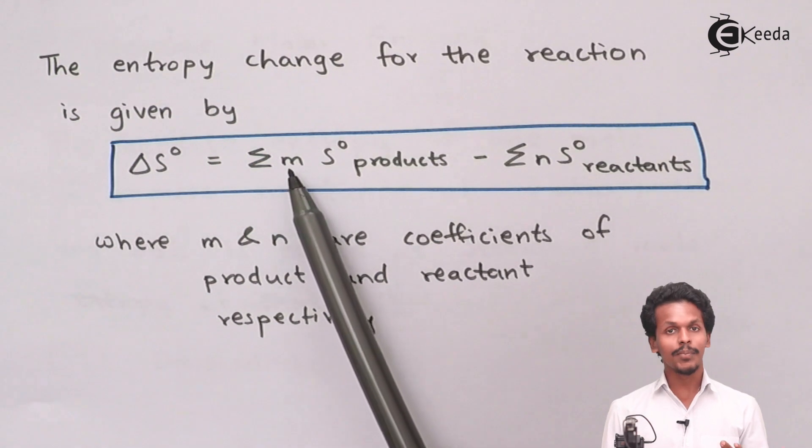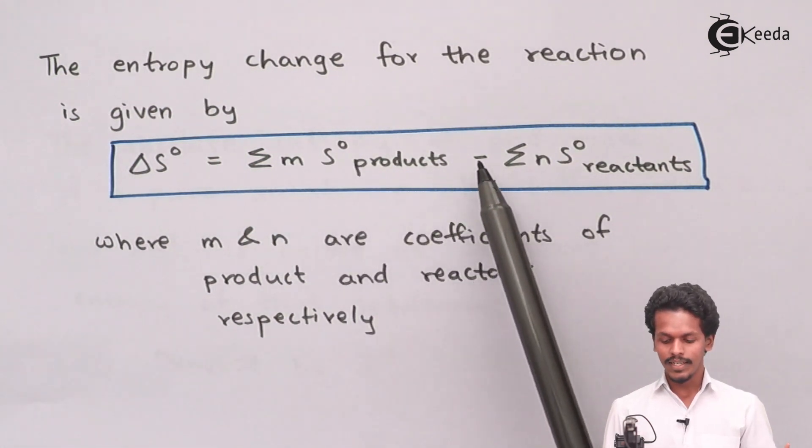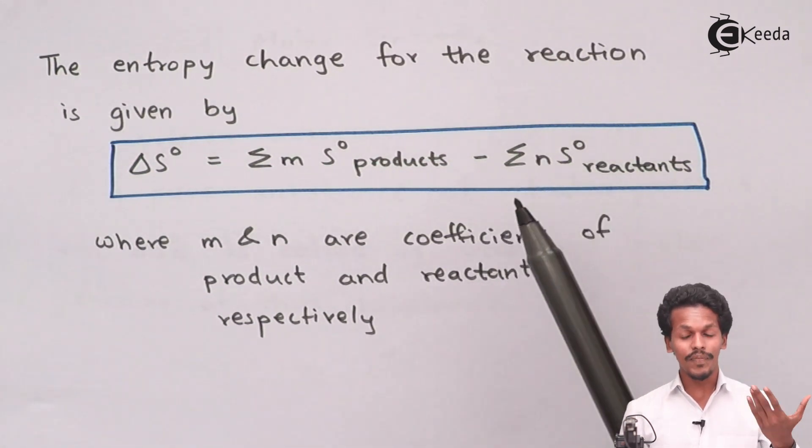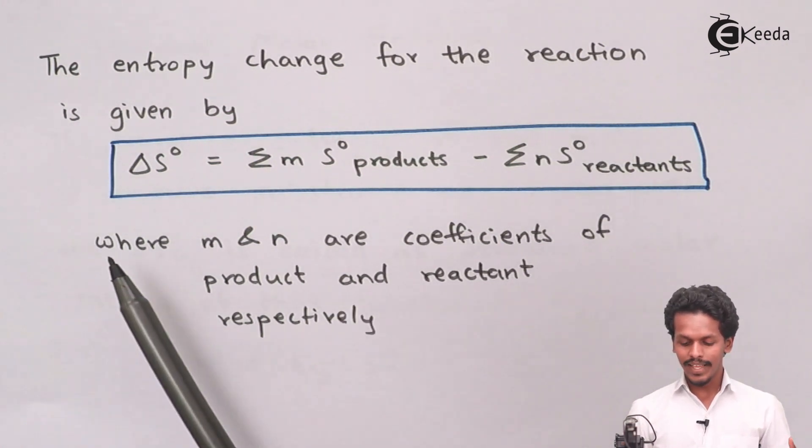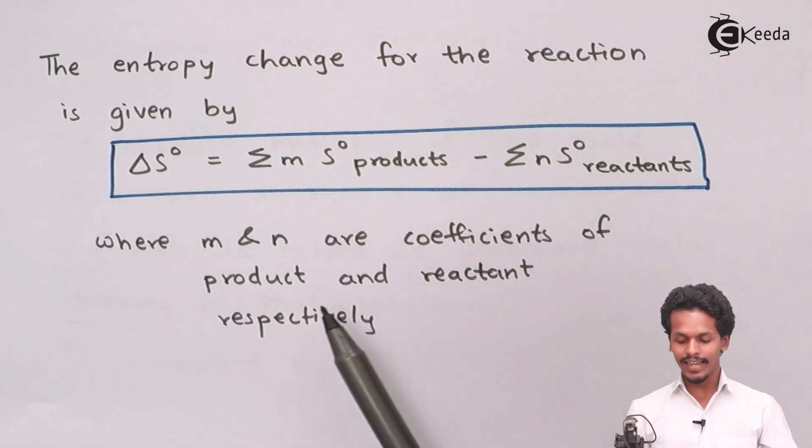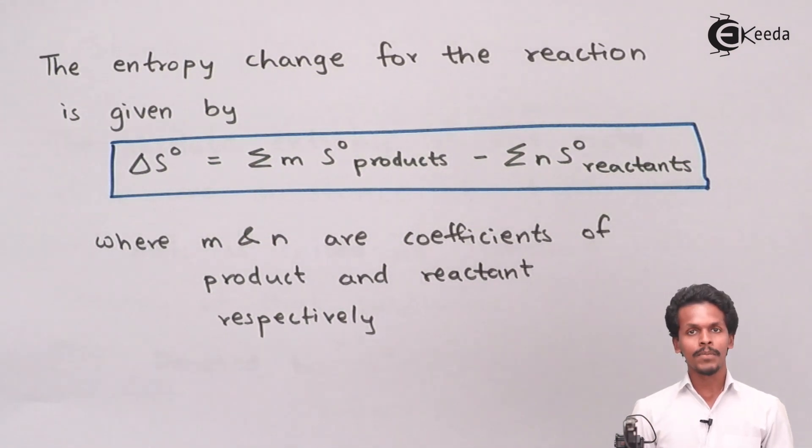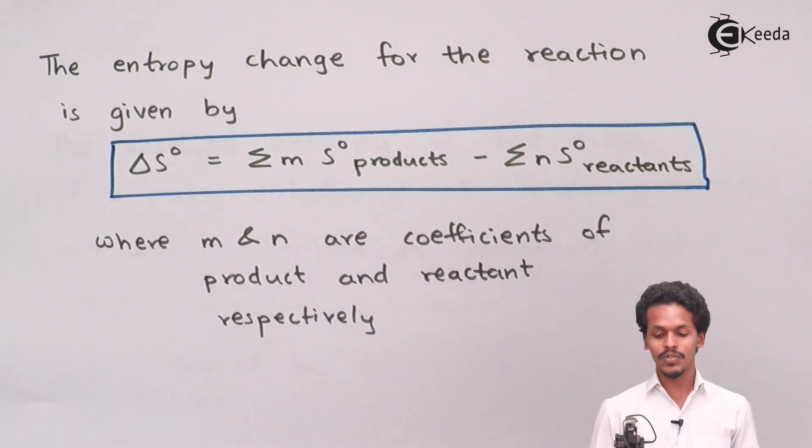...minus the summation of the number of moles of the reactant molecules and its entropy at standard value. Where m and n are the coefficients of product and reactant. This is a similar formula to predict the change in entropy by knowing the entropies of the products and reactants.